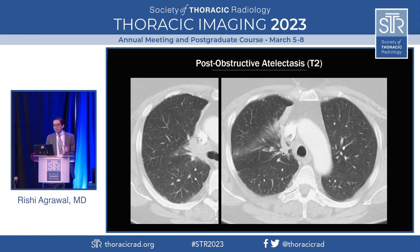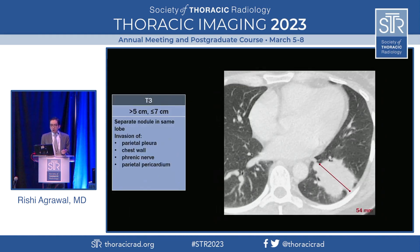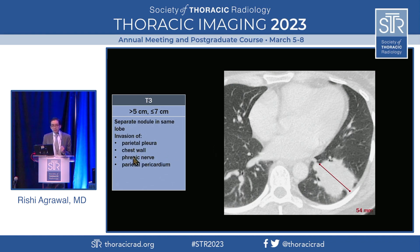Here's another T2 example: a hilar lesion at 26 millimeters, which would be T1, but it's bumped up because scrolling down reveals atelectasis in the anterior segment of the right upper lobe. A T3 lesion is greater than five centimeters or less than or equal to seven centimeters. It invades the parietal pleura or chest wall, and it invades the phrenic nerve, which runs in the mediastinal parietal pleura — that's why phrenic nerve invasion goes with T3.